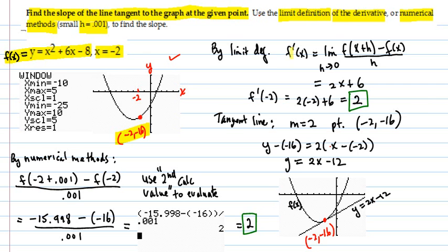By the limit definition to find a derivative, you would set up the difference quotient. You would plug into the function, as we've done before, work out all the algebra, do the limit, and it would come out to be 2x plus 6 as a derivative function.